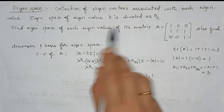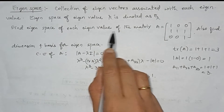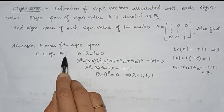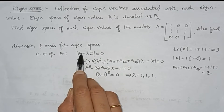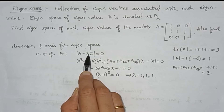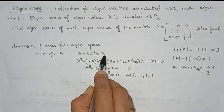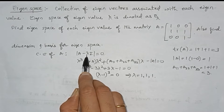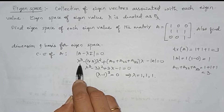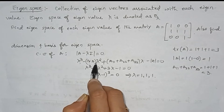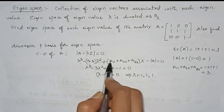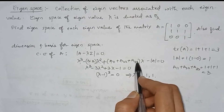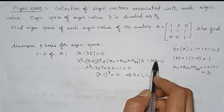First we need the eigenvalue. To find the eigenvalue, we need to find the characteristic equation of matrix A, which is given by the determinant of (A minus lambda times I) equal to 0. For a 3×3 matrix, this characteristic polynomial is given directly by lambda cubed minus trace(A) times lambda squared plus (A11 + A22 + A33) times lambda minus determinant of A equals 0.